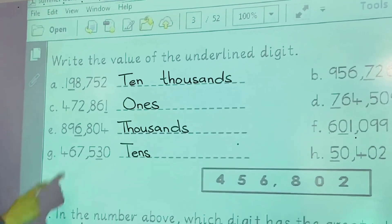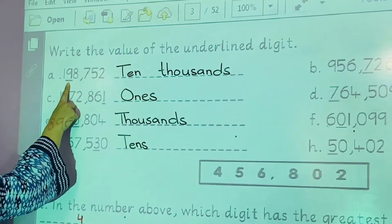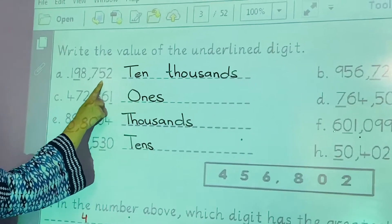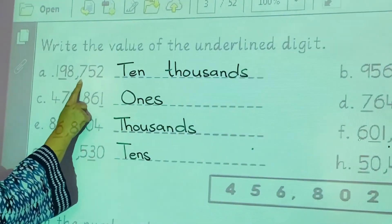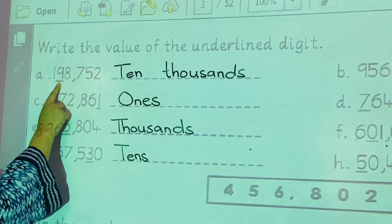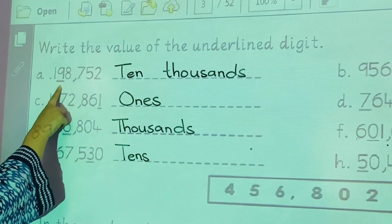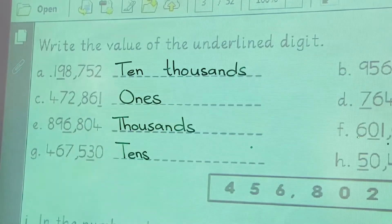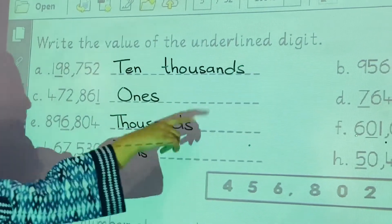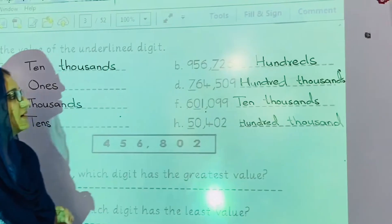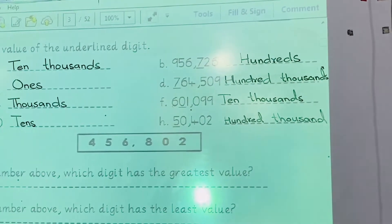In the first one, nine is underlined. So counting the place values: ones, tens, hundreds, thousands, ten thousands — the place value of nine is ten thousands. In part B, the place value of seven is hundreds.